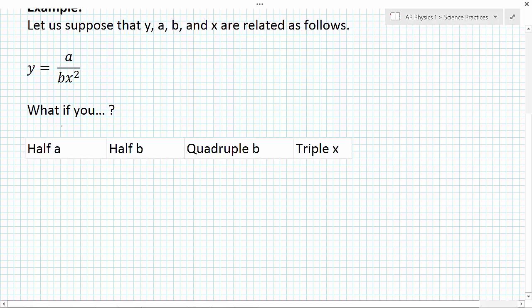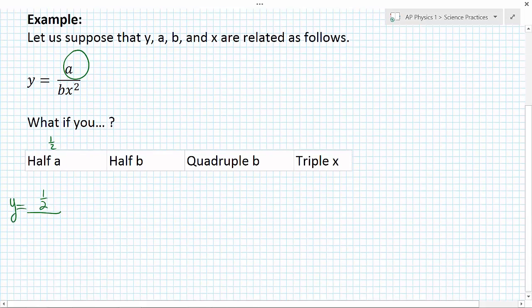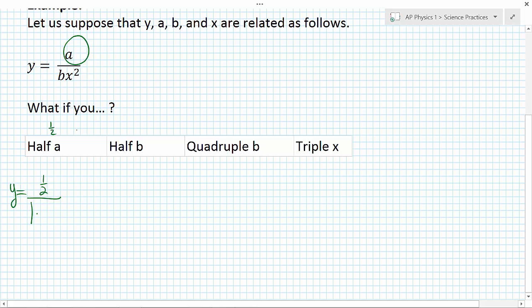The factor we're talking about here is one half. So y is going to be equal to... let's plug in a half for a. Notice we're just plugging in a half there, and we're going to plug in one for all the variables that are not changing. So one for b, x is one, and then we're going to square that value. So when I plug this into my calculator, a half divided by one times one times one is just going to be one, that means that y is going to be cut in half as well.